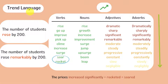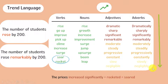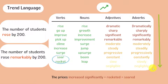Verbs and nouns are used to show the direction of change. They also allow us to vary sentence structure, which helps us avoid repetition. Adjectives and adverbs are used to show the degree of change. To put it simply, they help us show how big or small the rise or fall is.